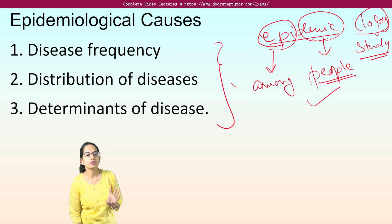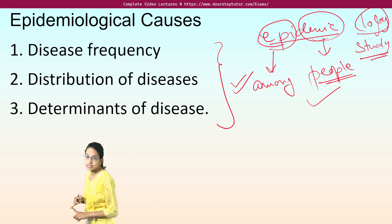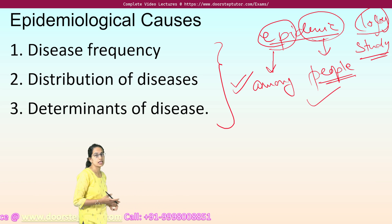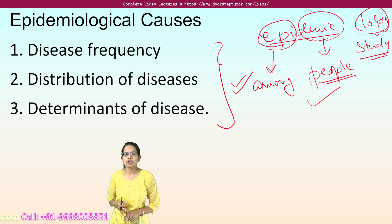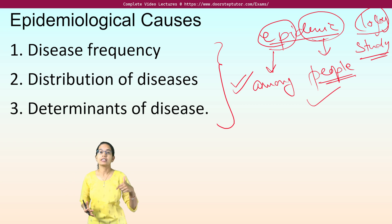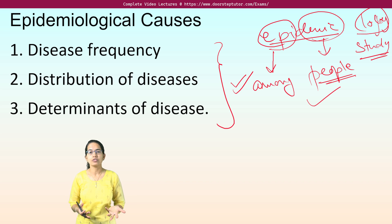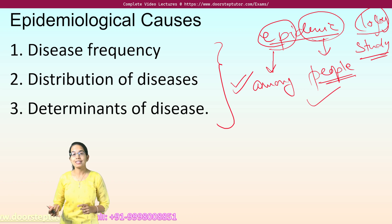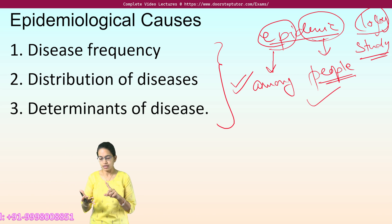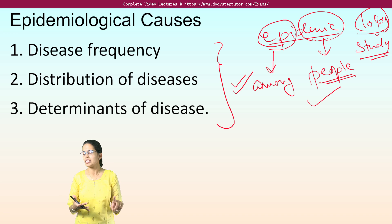There are three aspects to study in epidemiology. First is the frequency of the disease — we study the rate of prevalence, the rate of incidence, the death rate, and the mortality rate. Various variables are also studied, such as serum levels, cholesterol levels, blood tests, blood pressure, and other measurements that determine the biostatistics of an individual.